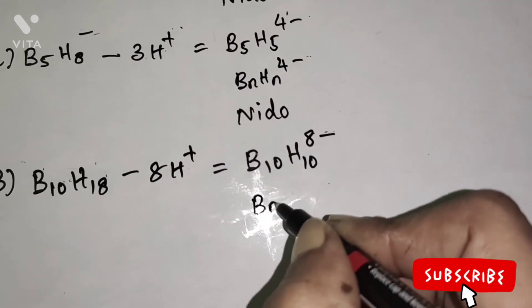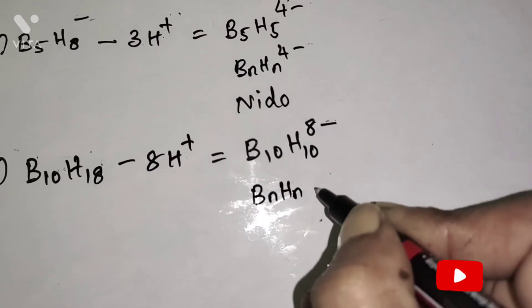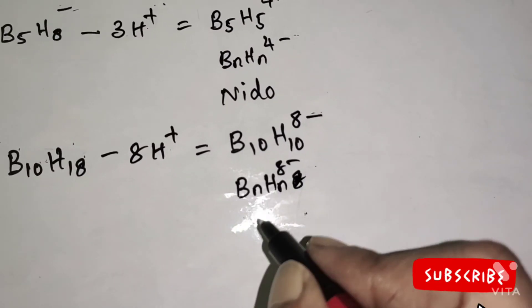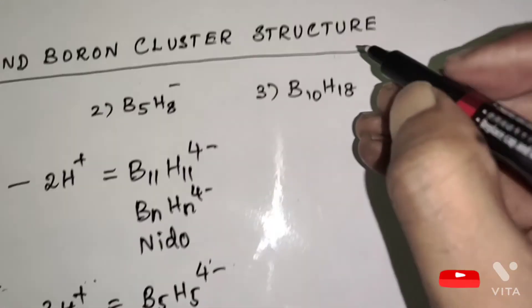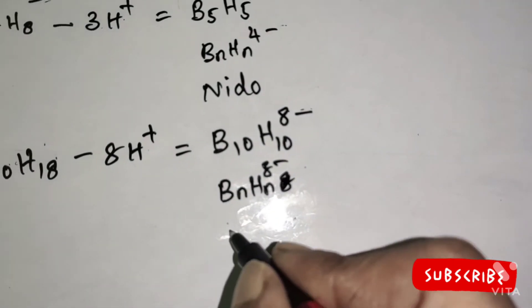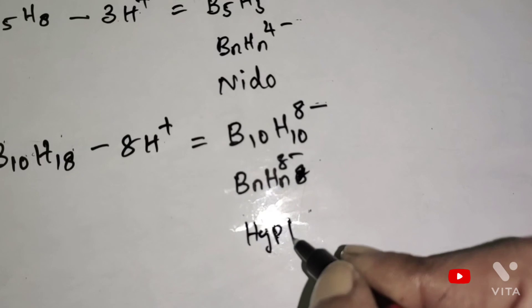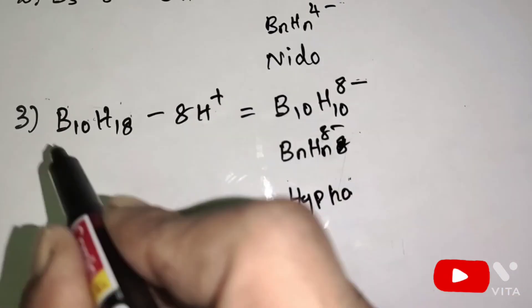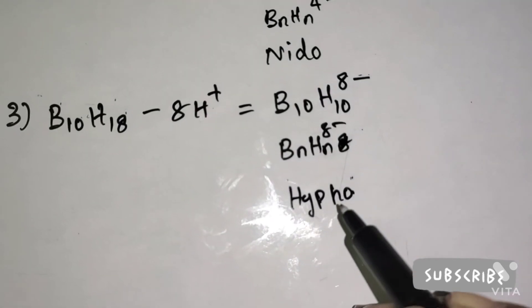Now, BnHn 8 minus, the cluster type is Hypo. Therefore, B10H18 cluster type is Hypo.